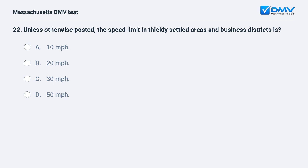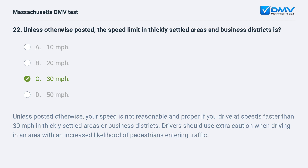Unless otherwise posted, the speed limit in thickly settled areas and business districts is: a. 10 miles per hour. b. 20 miles per hour. c. 30 miles per hour. d. 50 miles per hour. Answer: c. 30 miles per hour. Unless posted otherwise, your speed is not reasonable and proper if you drive faster than 30 miles per hour in thickly settled areas or business districts. Drivers should use extra caution in areas with an increased likelihood of pedestrians entering traffic.